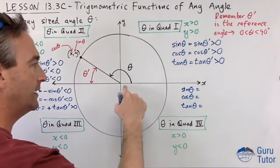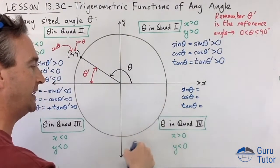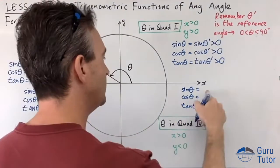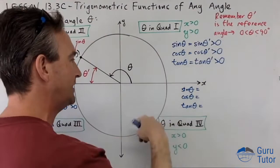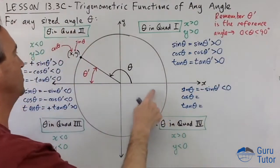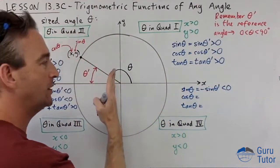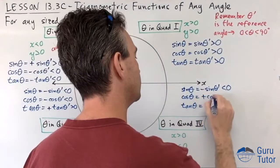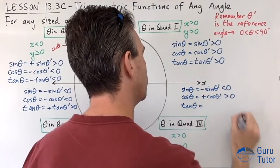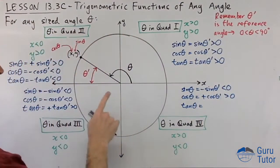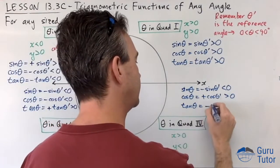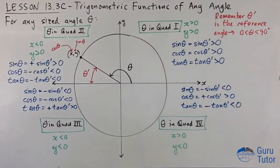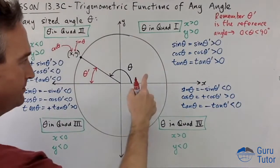In the fourth quadrant, x values are positive but y values are negative. Sine is always the y coordinate, so sine is negative. Cosine is always the x coordinate, and x is positive in the fourth quadrant, so cosine is positive. Tan is y divided by x — one positive, one negative — giving a negative value.